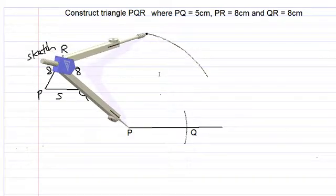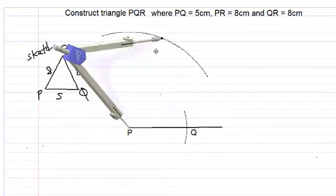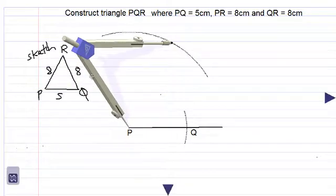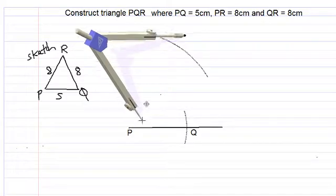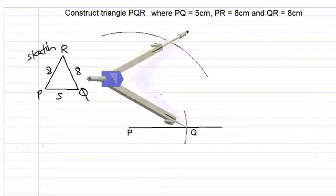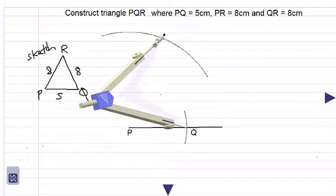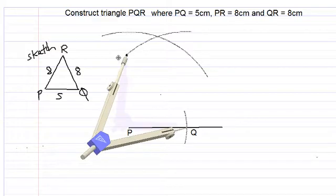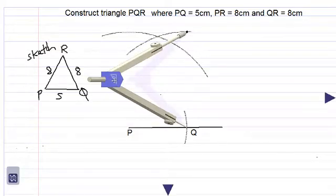So we draw one arc above, now we take our point of the compass and move over to point Q as shown, and we draw another construction arc without changing the radius of the compass.